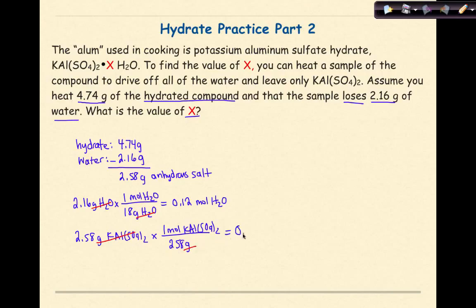That gives me an answer of 0.0099 moles of KAl(SO4)2. My next and final step is taking my moles of water and dividing it by the moles of the anhydrous salt. So if I plug my numbers in here, I'm going to have 0.12 moles of water divided by 0.0099 moles of the anhydrous salt. And when I do that, I get the number 12.